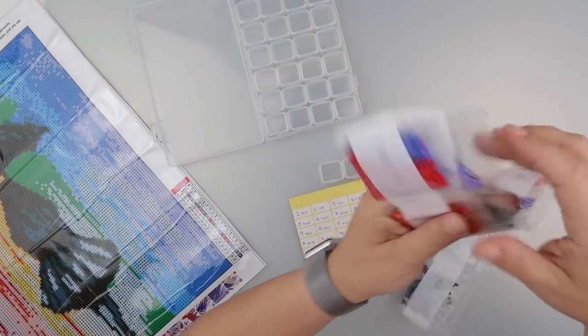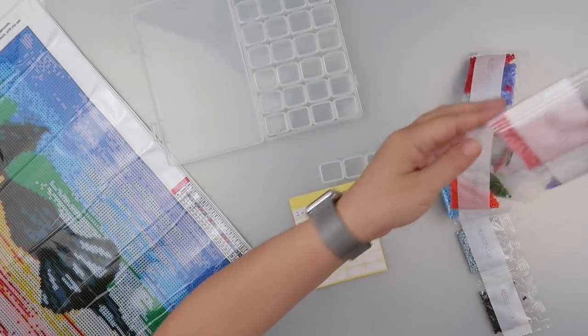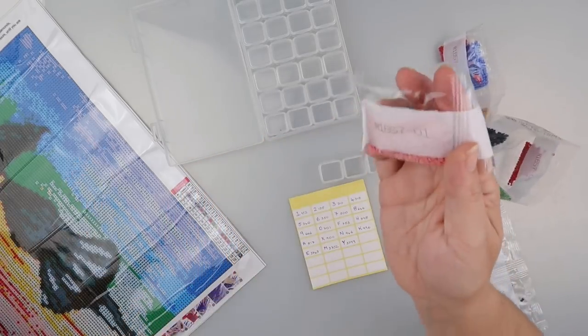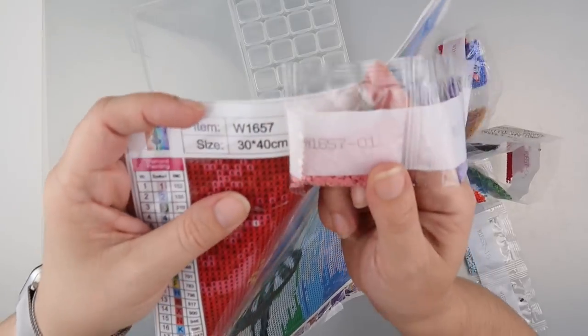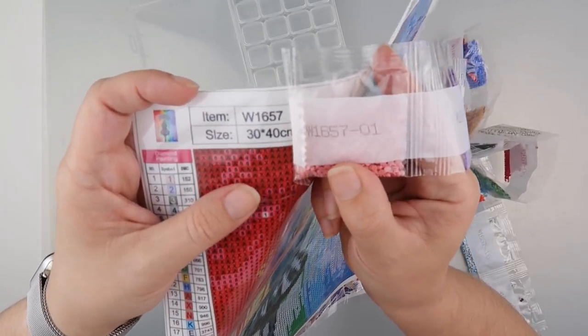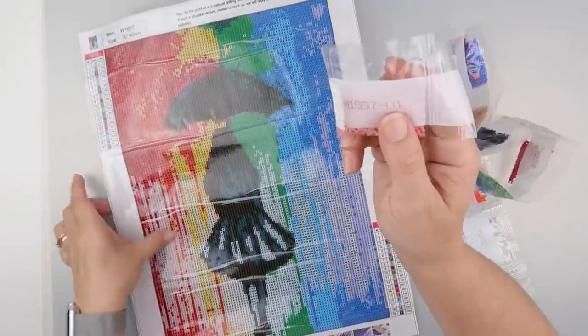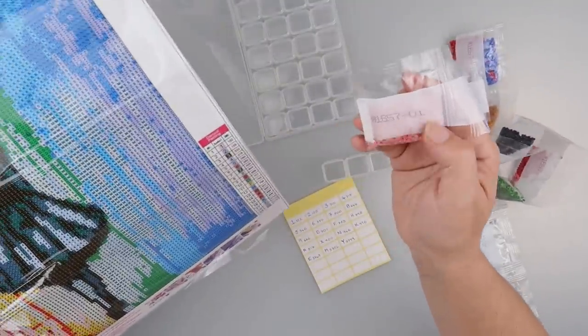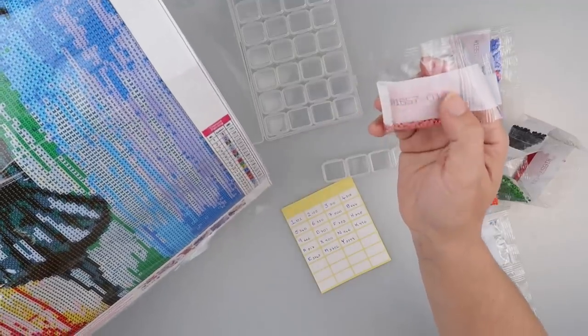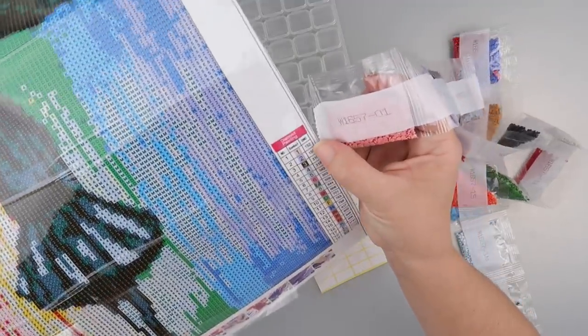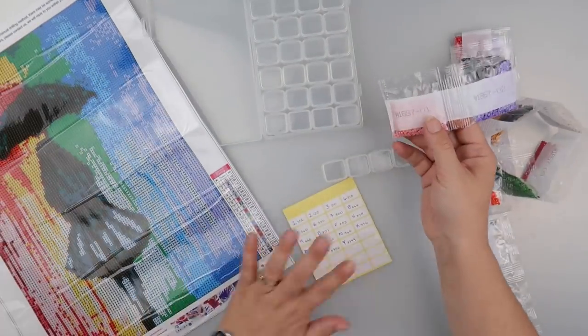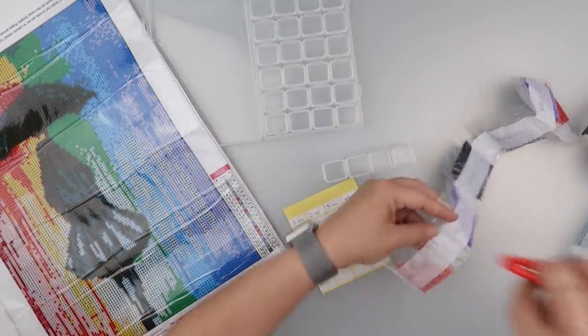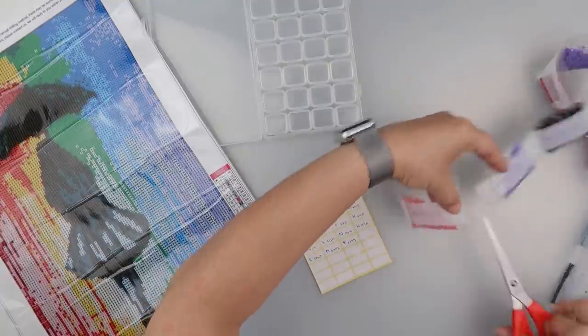Now, the way they've done this, on the packets we have a W code which is the code for the canvas. So W1657 is what's on there, and then 01 means it's number one. For this one it doesn't have the DMC codes on the packet, but it does have them on the chart, so at least I've got that to reference. Now I'm not sure how many of each of these are going to fit in each little tub.